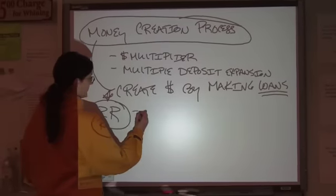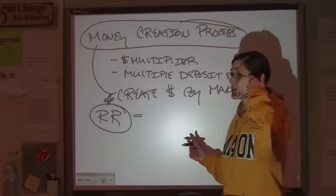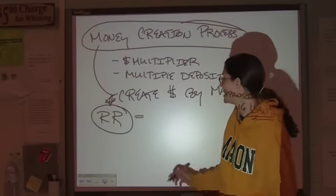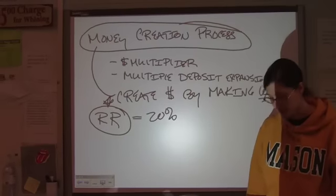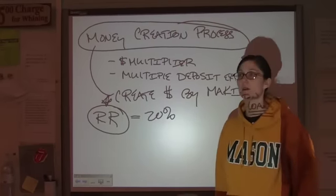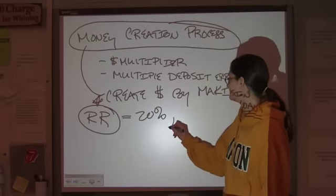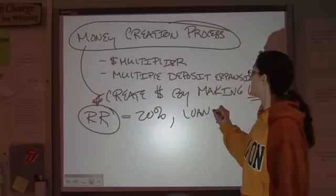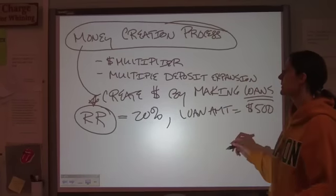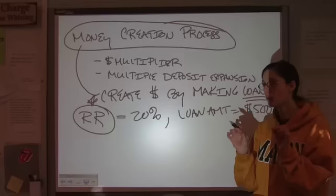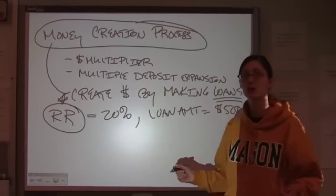Now, let's say, for example, that the reserve requirement is 20%. That's a very typical number that you tend to see in multiple choice questions. If the reserve requirement is 20% and the bank makes a loan of, say, $500, then how much money total is going to be created in the banking system by that $500 loan?